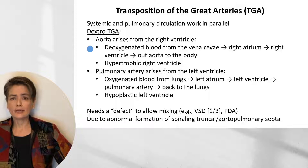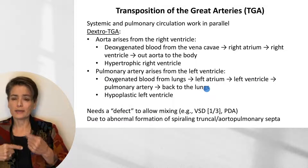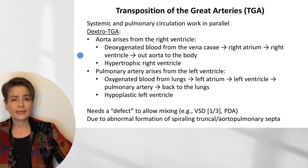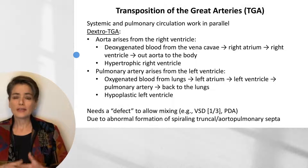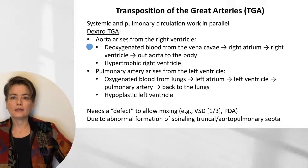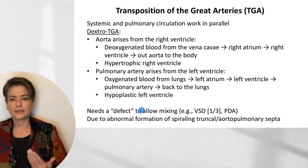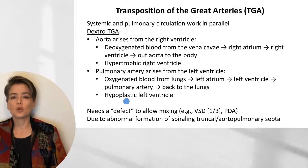Deoxygenated blood from the vena cava enters the right atrium, then the right ventricle, then out the aorta to the body — completely bypassing the lungs. At the same time, oxygenated blood enters the left atrium, then the left ventricle, then right back out the pulmonary artery to the lungs again: two circulations operating in parallel. As with any muscle, increased pressure causes hypertrophy and decreased pressure causes hypoplasia. So in TGA, we see hypertrophy of the right ventricle, which is now supplying the entire systemic circulation, while the left ventricle becomes hypoplastic because it is now supplying only the pulmonary circulation.